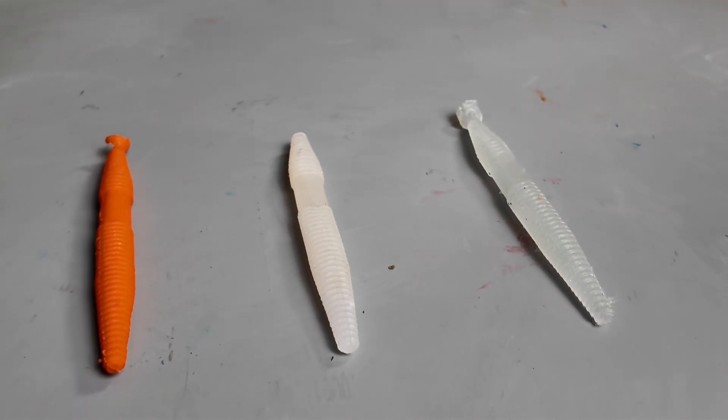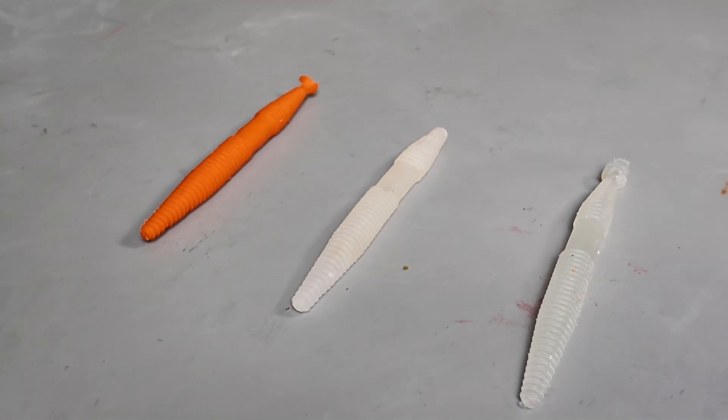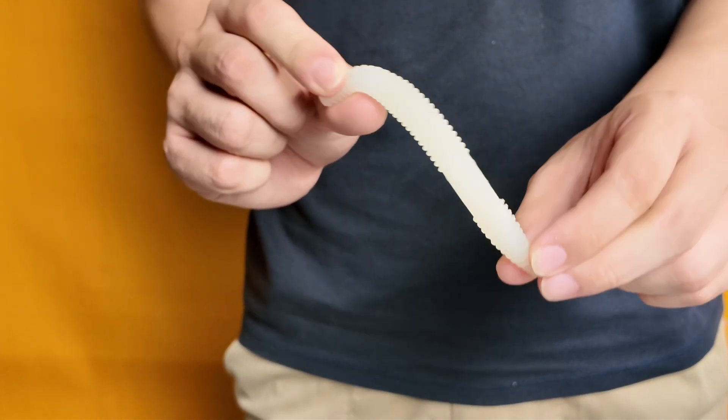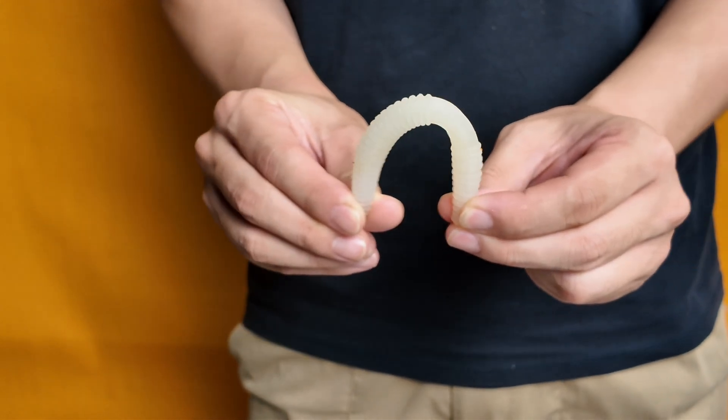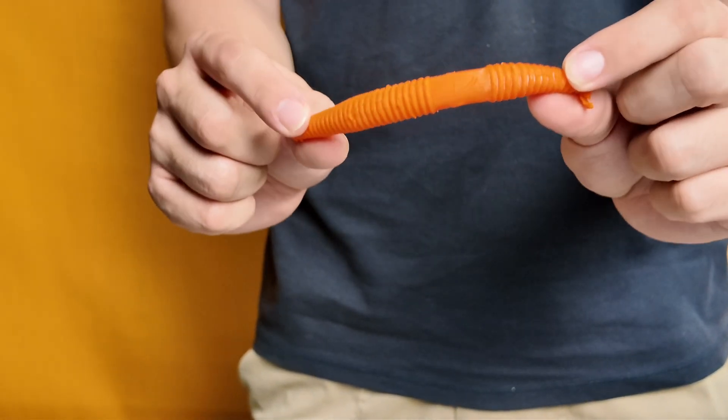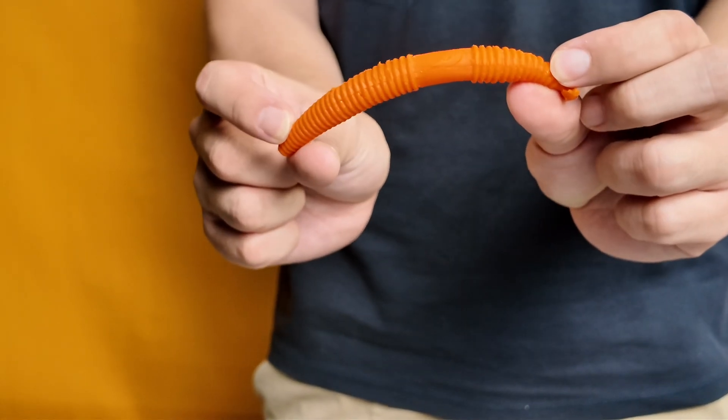Next, the fold and release. Fold the tail up to the head and let go. 20A snaps back faster with better profile retention. And 40A snaps back almost instantly, keeping a clean outline.